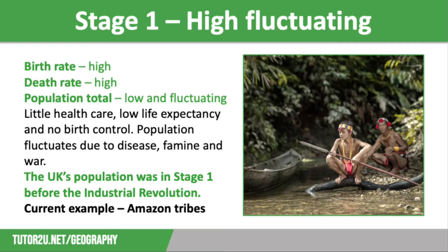Very few places around the world are in Stage 1 now, with the exception of some indigenous tribes — for example, in parts of Indonesia, Brazil and Malaysia — where small groups of people live separately with little contact to the outside world. They have high birth rates and high death rates. The UK was in Stage 1 before the Industrial Revolution.